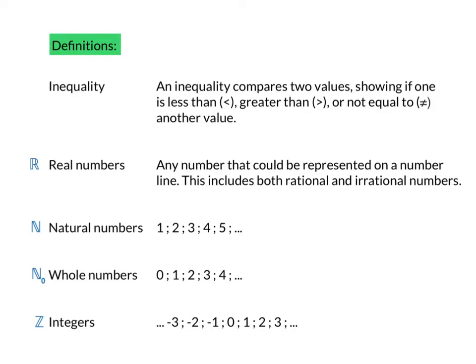Some other definitions to revise: real numbers are any number that could be represented on a number line, including rational and irrational numbers. Rational numbers are numbers that can be written like a fraction — so 5 over 6, or 10, or negative 3, or 100. Irrational numbers are numbers that cannot be written as a fraction, for example the number pi, or the square root of a number that isn't a perfect square, such as the square root of 2.